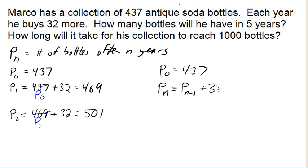For example, P₃ would be P₂, because 3 minus 1 is 2, plus 32. I already know what P₂ is. P₂ is 501. Add 32. So P₃ is 533 bottles.